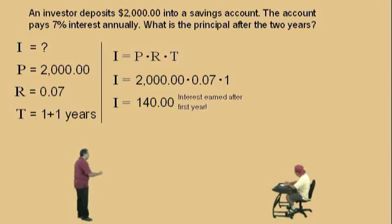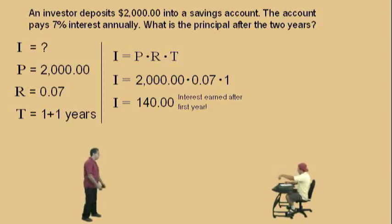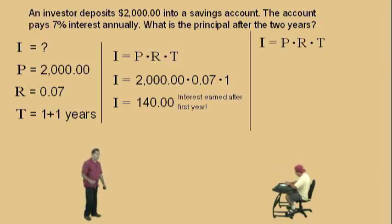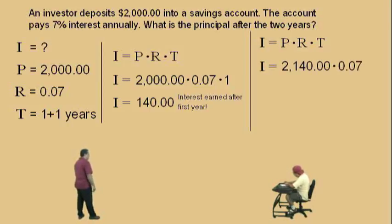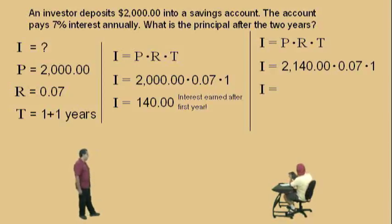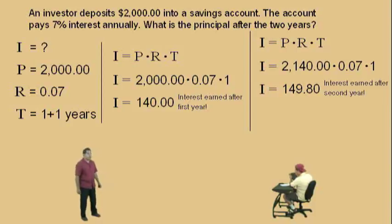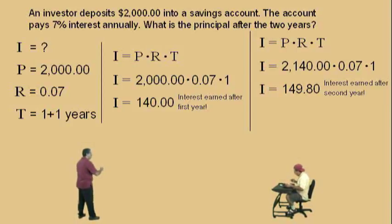After the first year, the principal is $2,140. Now let's do the calculation for the second year. I equals PRT. Our new principal is $2,140, our rate is 0.07, and our time is one year. The earned interest for the second year is $149.80.